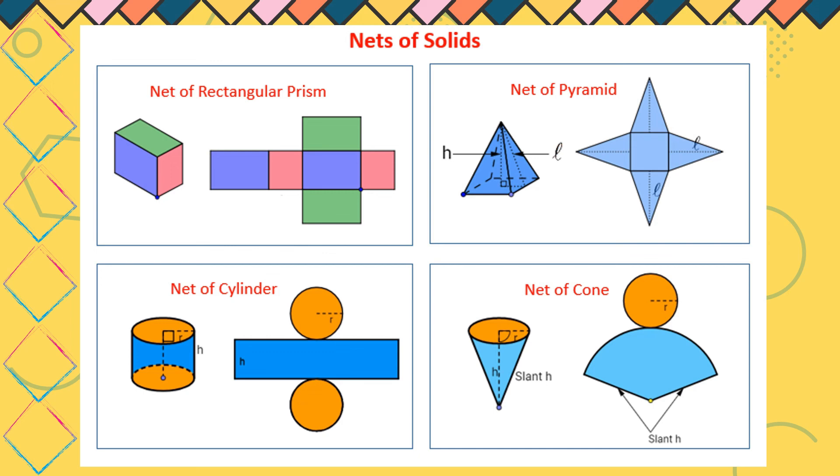Ito yung example natin ng nets of solid figures. Kapag ginawa natin itong net na ito, yung number 1, we can make it as a rectangular prism. Yung number 2 sa right, kapag ginawa natin ito, it is a square pyramid. Number 3, ito yung cylinder. And then, the last one is a cone. Pwede nyo itong gawin sa bahay, para maging example ng mga solid figures.